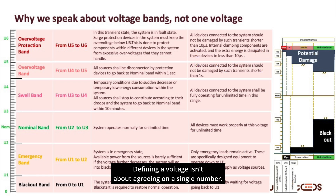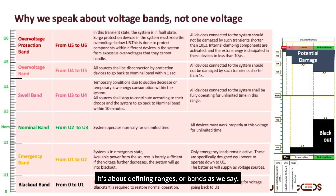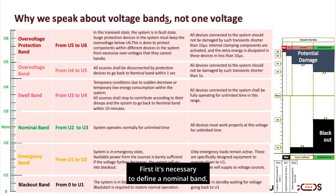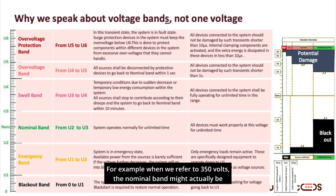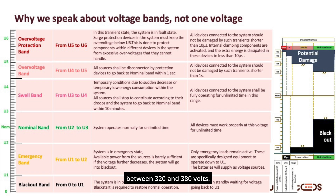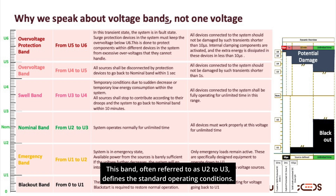Defining a voltage isn't about agreeing on a single number — it's about defining ranges, or bands. First, it's necessary to define a nominal band: the band within which the system operates indefinitely. For example, when we refer to 350 volts, the nominal band might actually be between 320 and 380 volts. This band, often referred to as U2 to U3, defines the standard operating conditions.